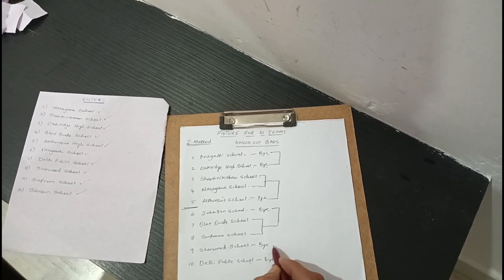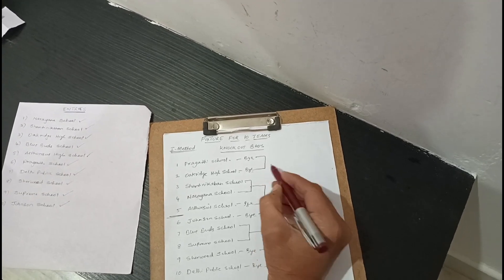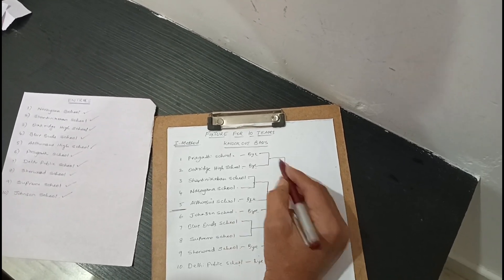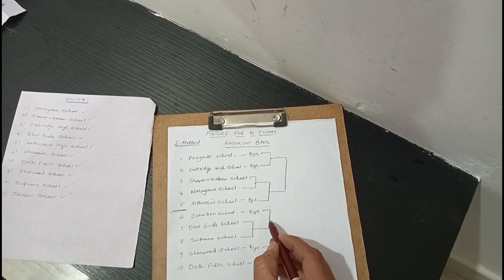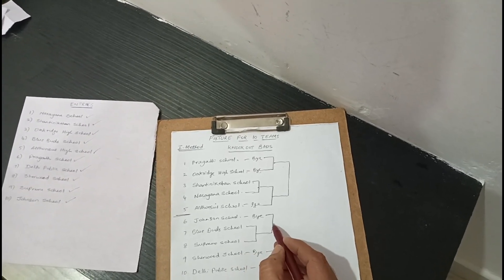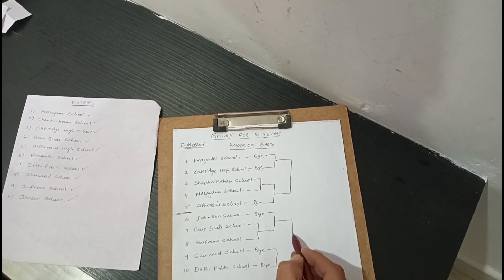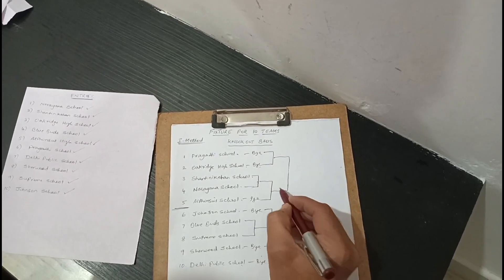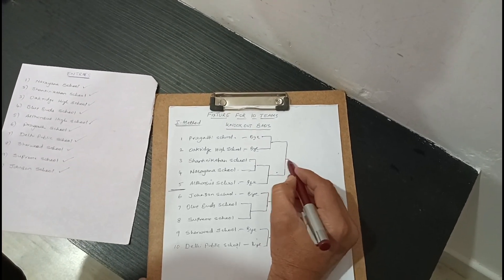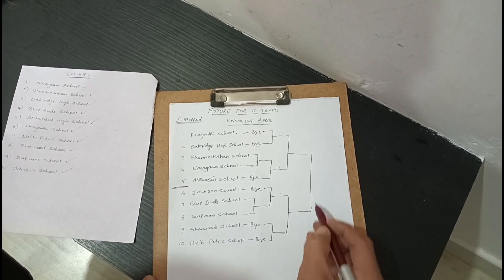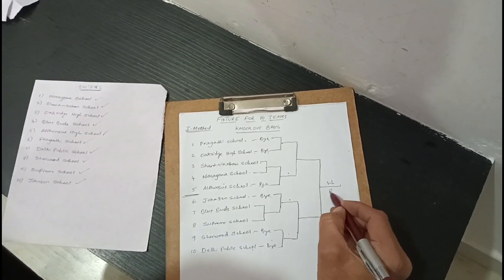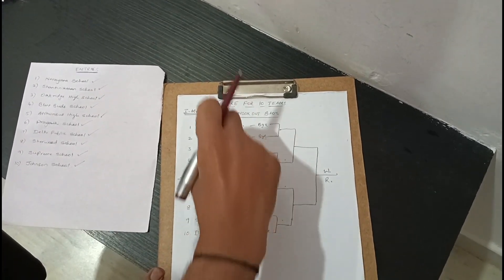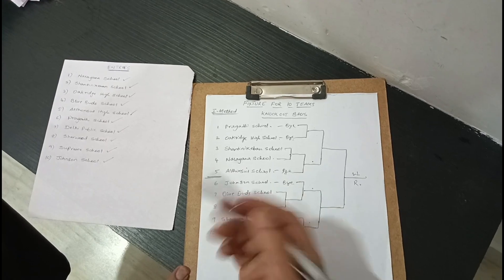Number six plays the winner of number seven and eight, and number nine plays number ten. This constitutes the quarterfinal stage. The winners from the upper half and lower half advance to the semifinals — four teams enter the semi-finals — and the winners of the semi-finals play the final. This is the first method of distributing teams into the upper half and lower half according to their entries. I'll now show you the second method.